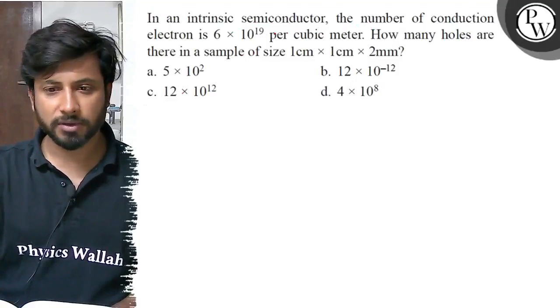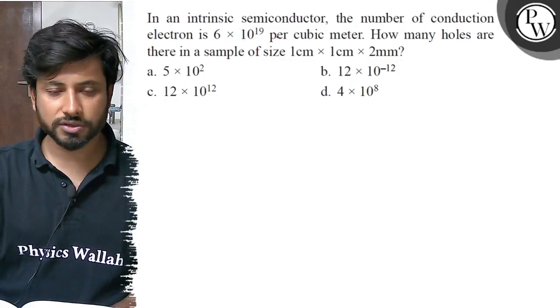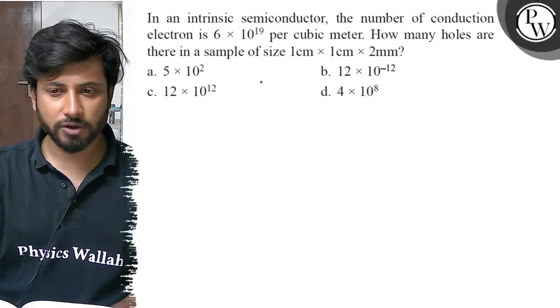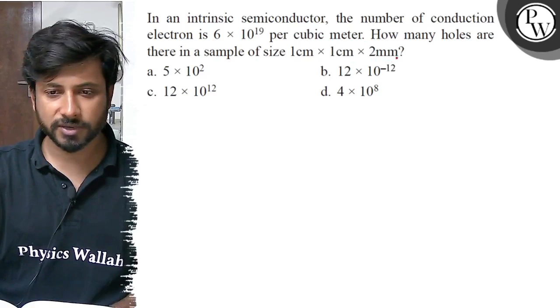In an intrinsic semiconductor, the number of conduction electrons is 6 into 10 to the power 19 per cubic meter. How many holes are there in a sample of size 1 centimeter by 1 centimeter by 2 millimeter?